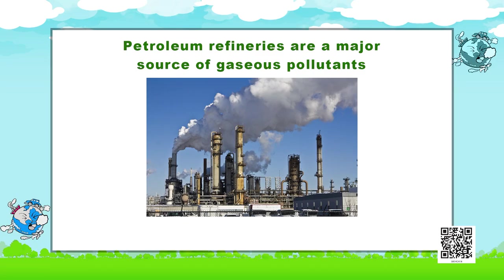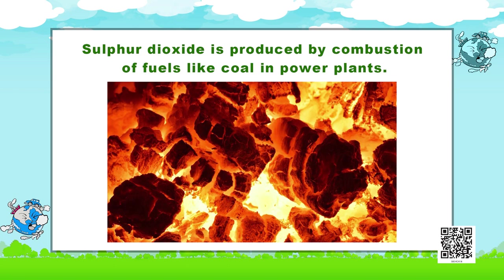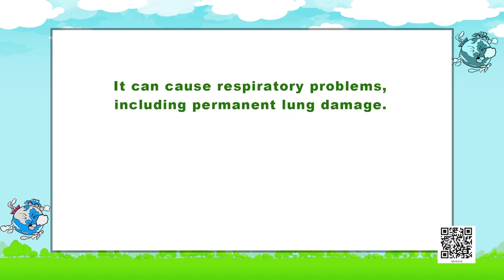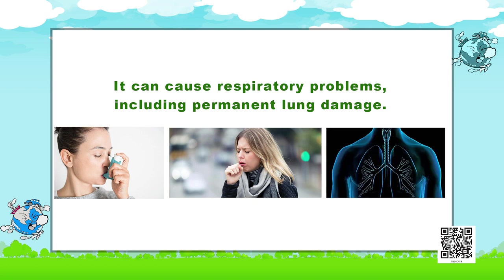Many industries are also responsible for air pollution. Petroleum refineries are a major source of gaseous pollutants like sulphur dioxide and nitrogen dioxide. Sulphur dioxide is produced by combustion of fuels like coal in power plants. It can cause respiratory problems including permanent lung damage.